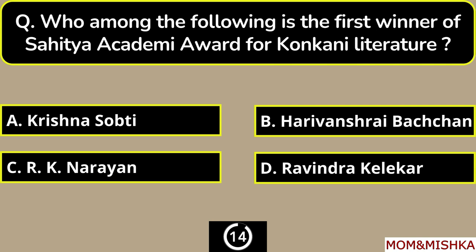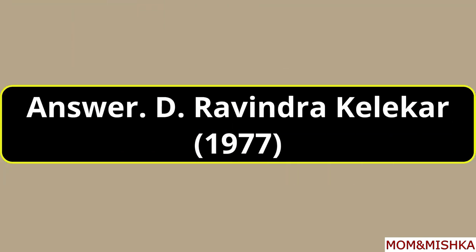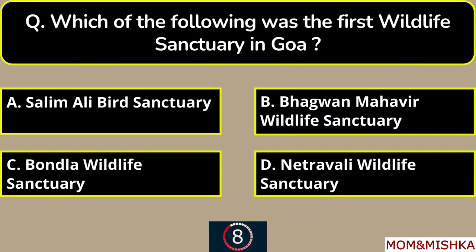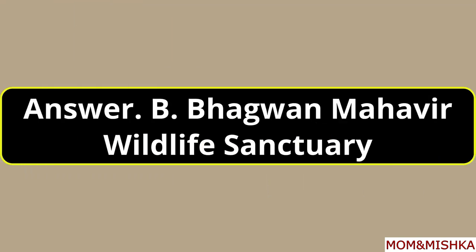Who among the following is the first winner of the Sahitya Akademi Award for Konkani literature? It's Ravindra Kelekar, in year 1977, option D. Which of the following was the first wildlife sanctuary in Goa? It is Bhagwan Mahavir Wildlife Sanctuary, option B.